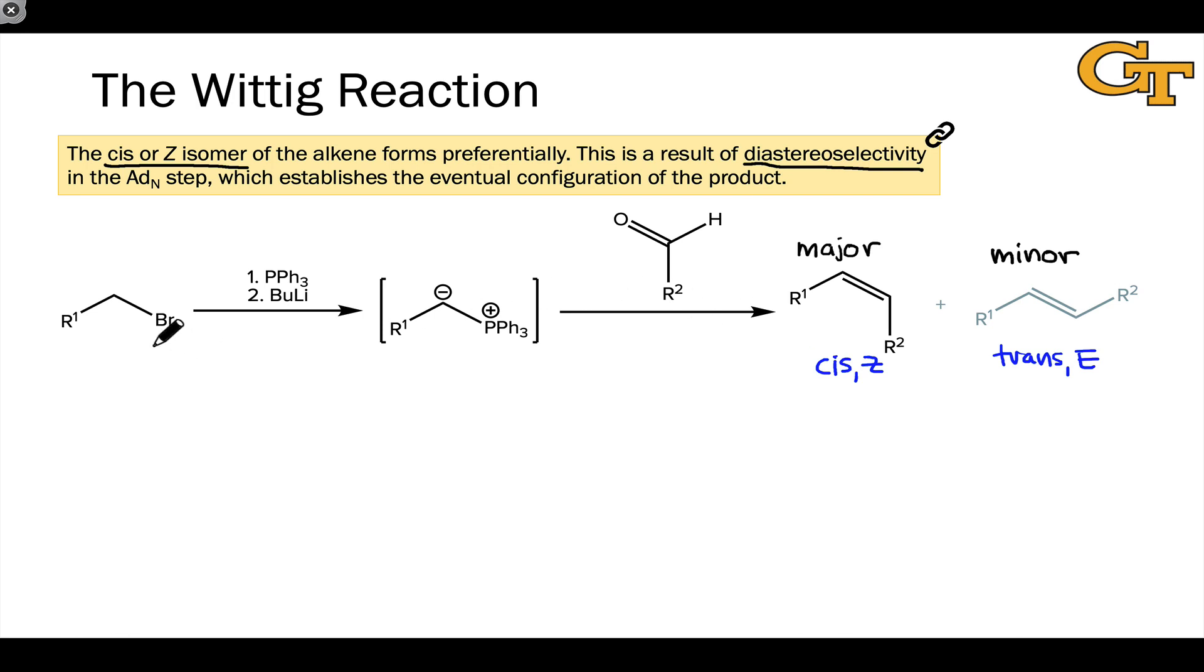To explain this, we need to think about the stereochemical course of the Wittig reaction and in particular what happens in the first addition SN2 elementary step, which really establishes the eventual configuration of the product.